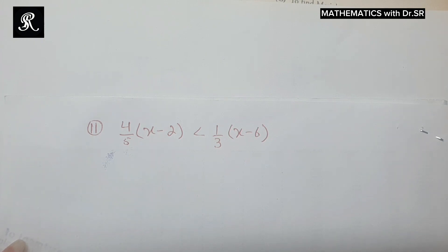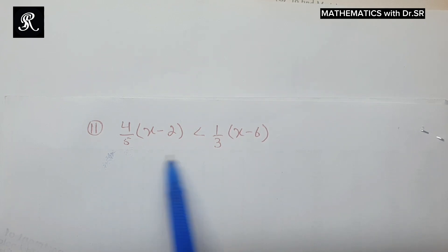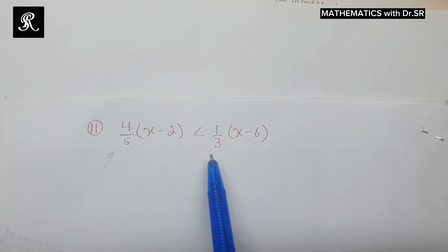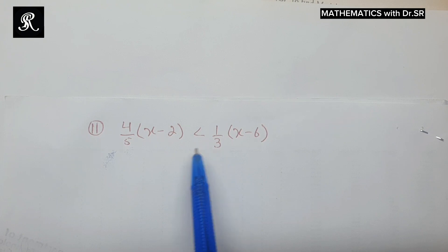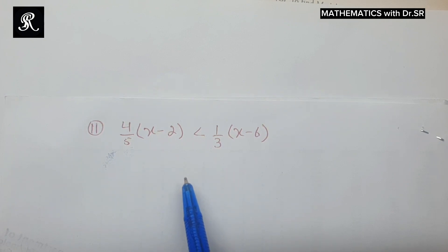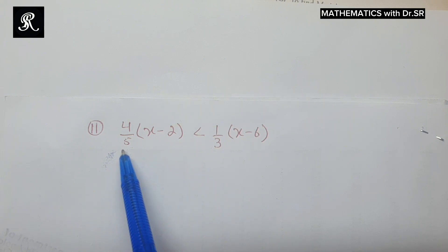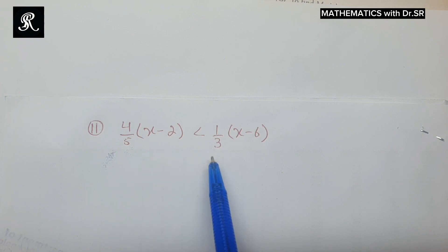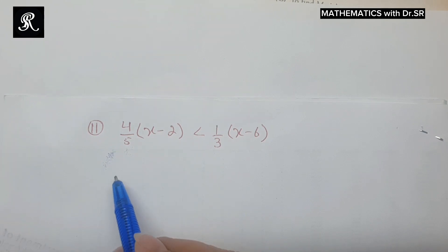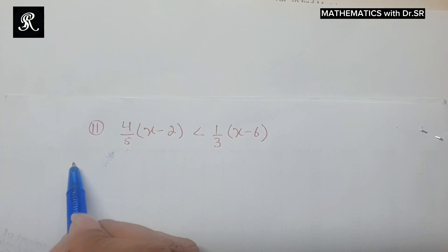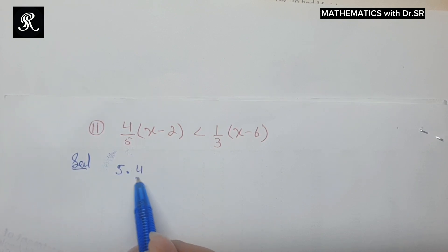In this video I'll discuss problems 11 and 12 of the inequalities involving fractional terms. In order to solve this kind of inequality we need to get rid of the fraction terms. For that we can use the LCM method, multiplying both sides of the inequality with the least common denominator. Since there are no variable terms in the denominators, we can also simplify using cross multiplication, the same as we solve other inequalities.